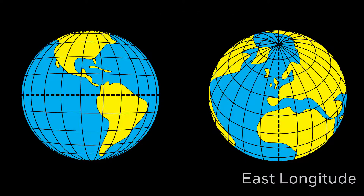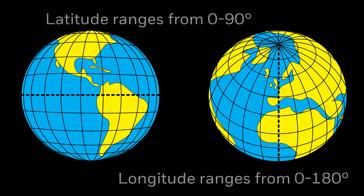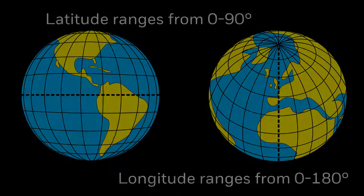Notice that latitude uses two digits ranging from 0 to 90, whereas longitude uses three digits from 0 to 180.